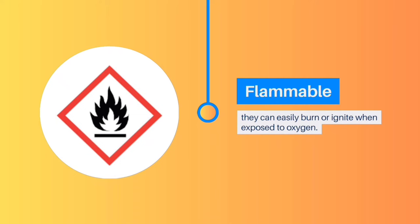Flammable: Many chemicals are characterized as flammable as they can easily burn or ignite when exposed to oxygen. Examples include methanol, acetone, propane, and butane.